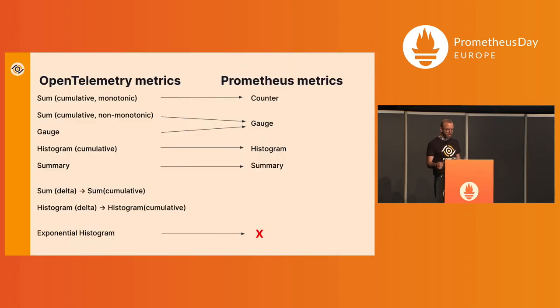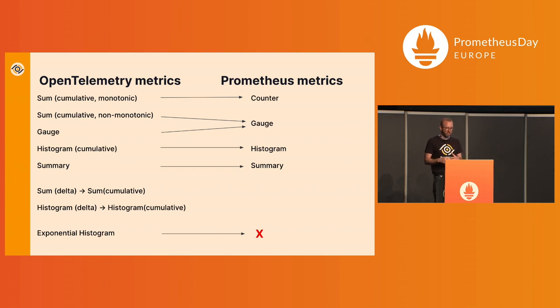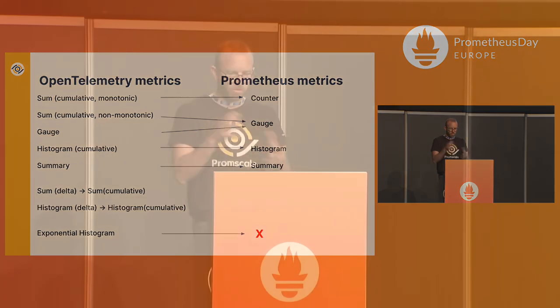Another area is metric correlation. The first thing to keep in mind is that OpenTelemetry metrics and Prometheus metrics have different types, so they need to be mapped. Here you can see the mapping — there may be some types you cannot map. For example, OpenTelemetry has an exponential histogram that doesn't have a way to map into Prometheus metrics. There were a lot of discussions between the OpenTelemetry and Prometheus projects to arrive at this mapping. So make sure you're using metric types that you can convert, especially if you're going to be storing them in Prometheus.